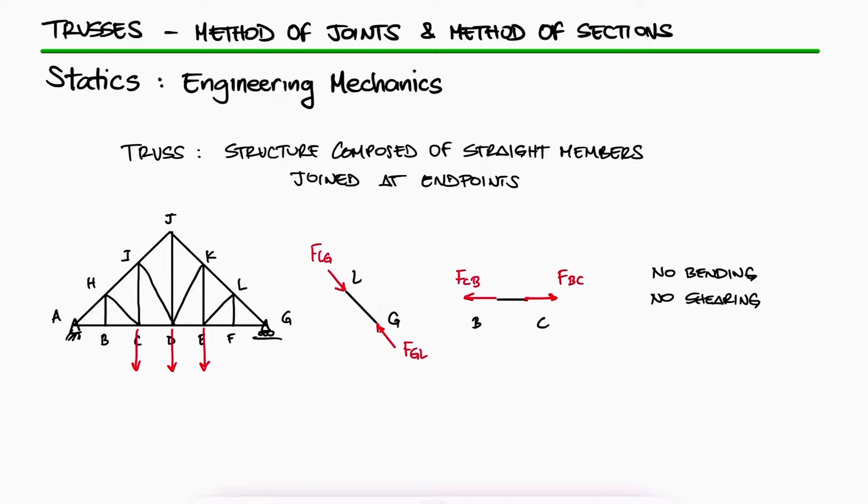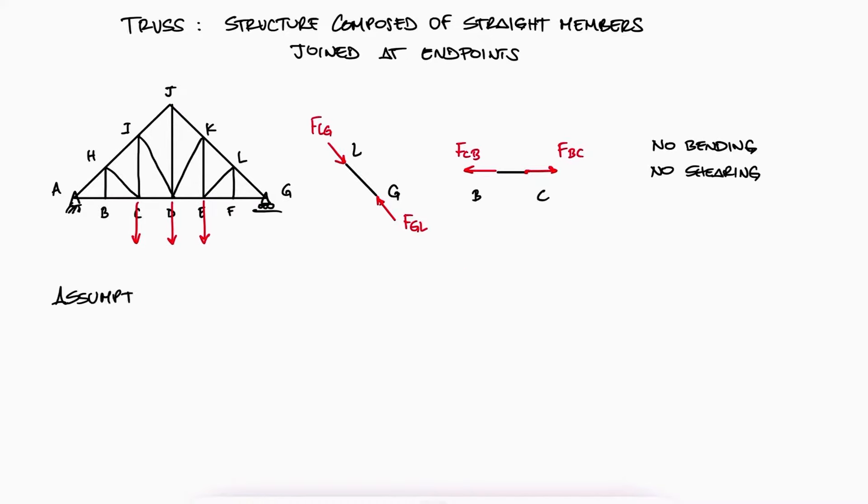It's important to understand some of the assumptions that we'll use to solve all truss-related problems. All of the joints within a truss can be represented by a pin connection, meaning the straight members are free to rotate and no reaction moment is created at the connections.